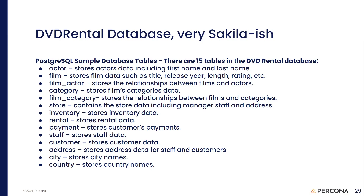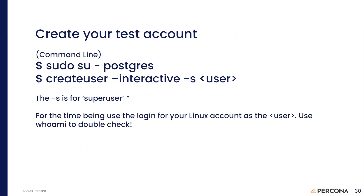Now, we don't want you running everything as the postgres user — just like in MySQL you're not supposed to run everything as root. So back to the bash command line, sudo su as postgres again. We're going to type createuser --interactive and then -s and then the username. This -s flag gives that person superuser privilege.